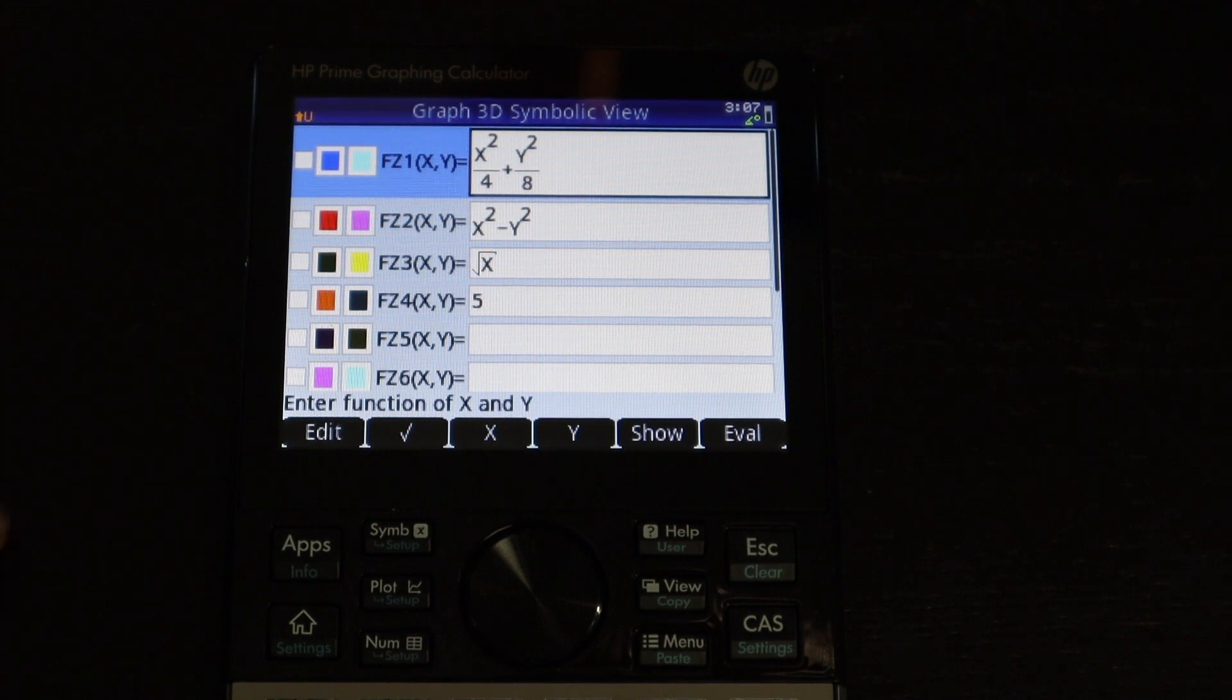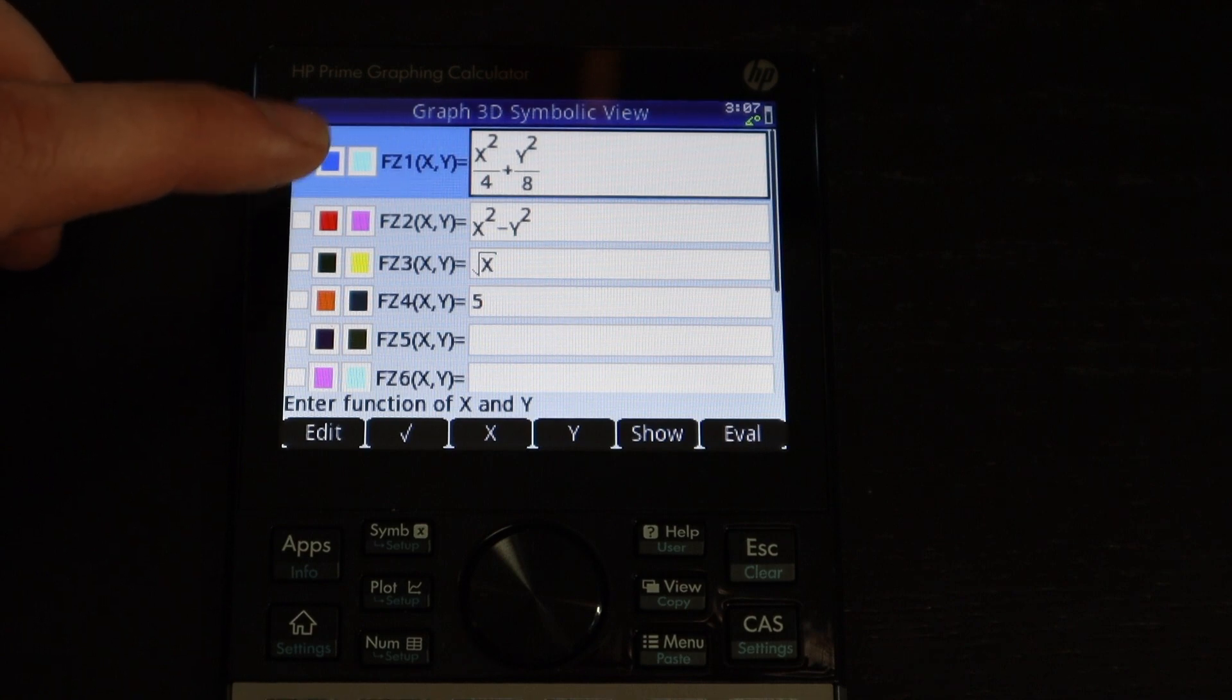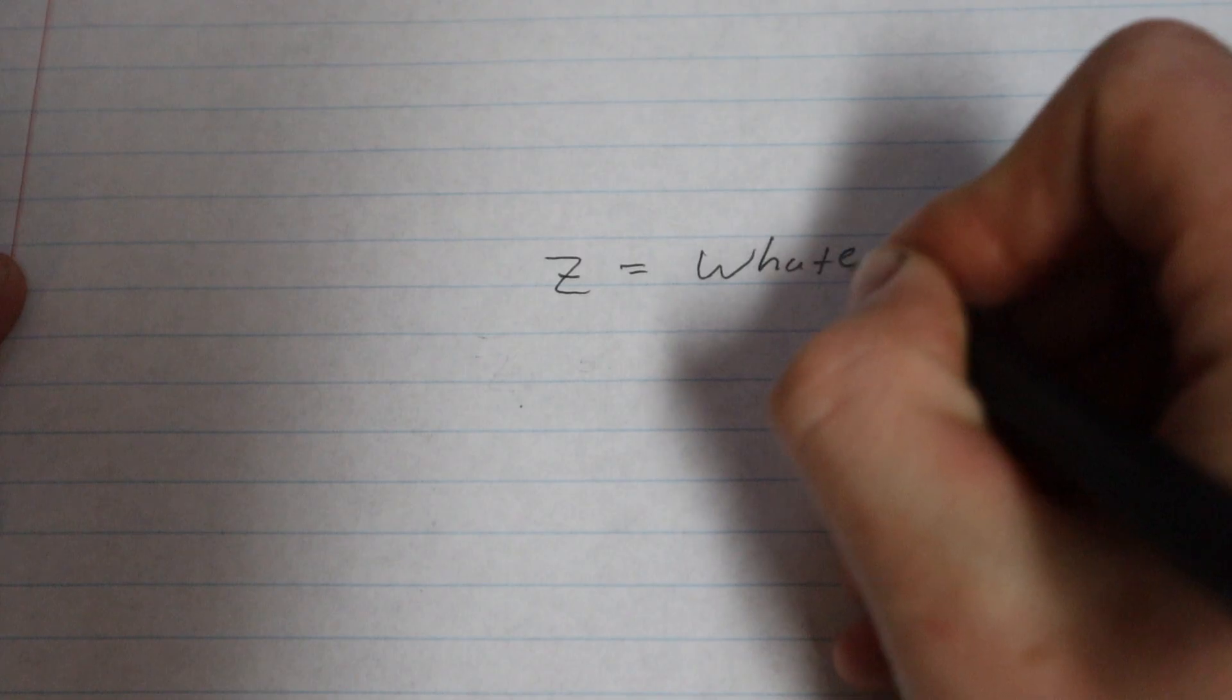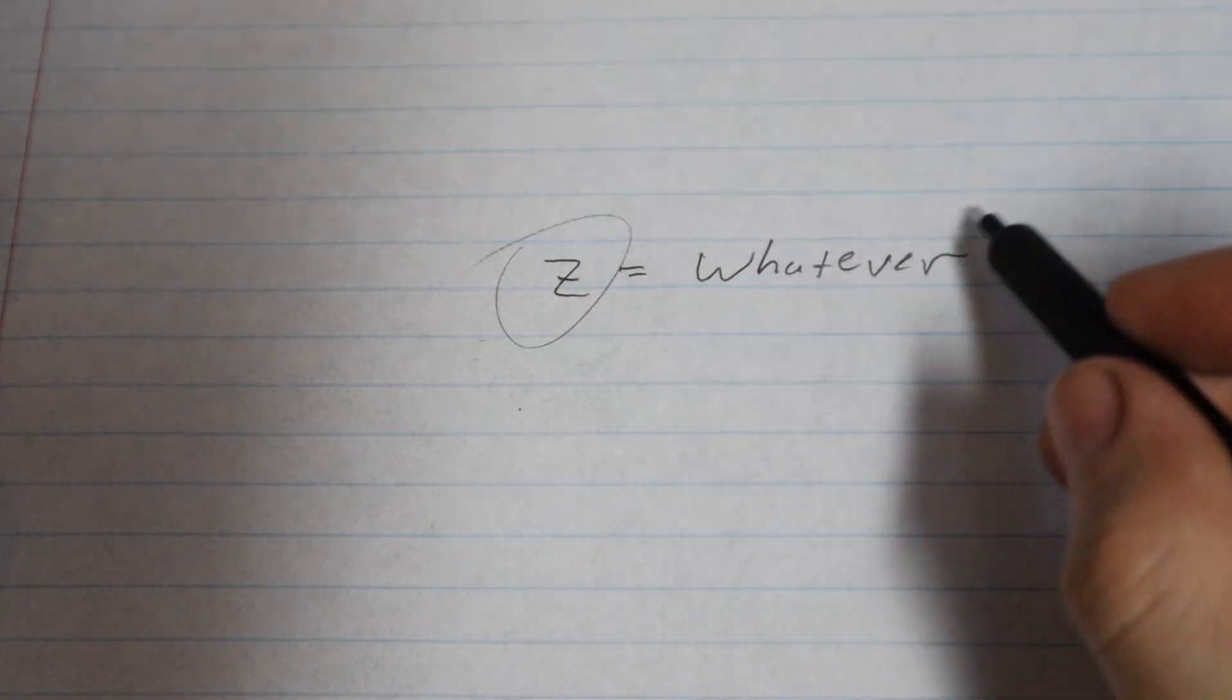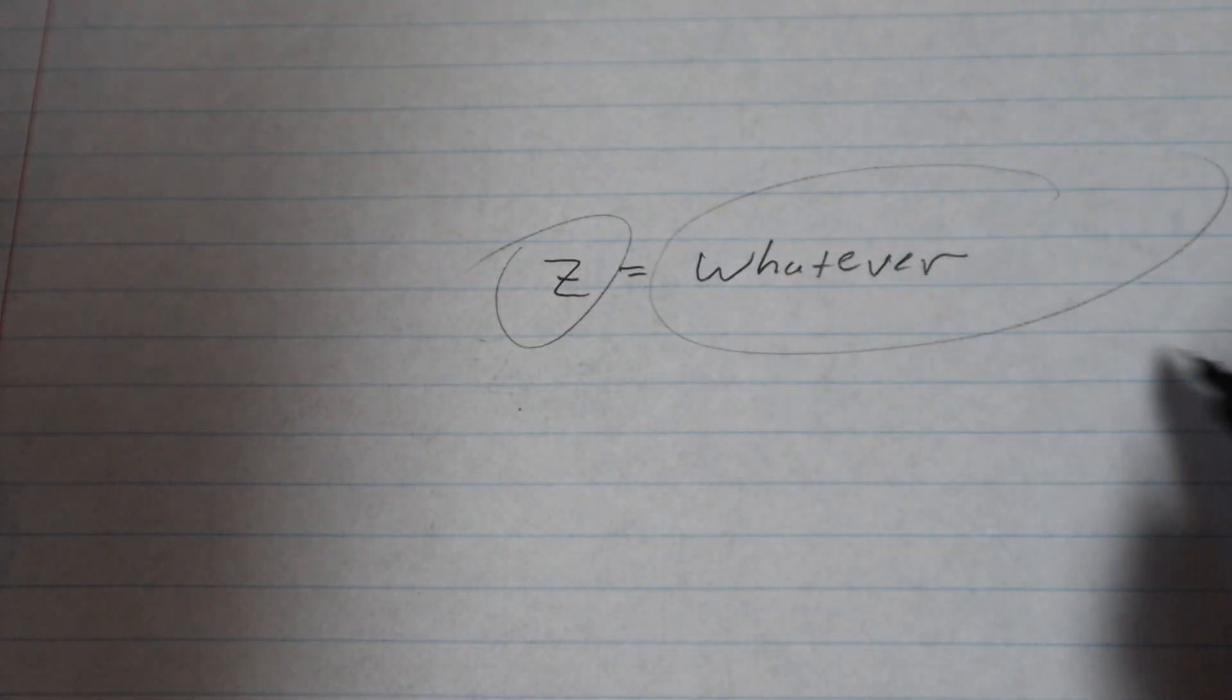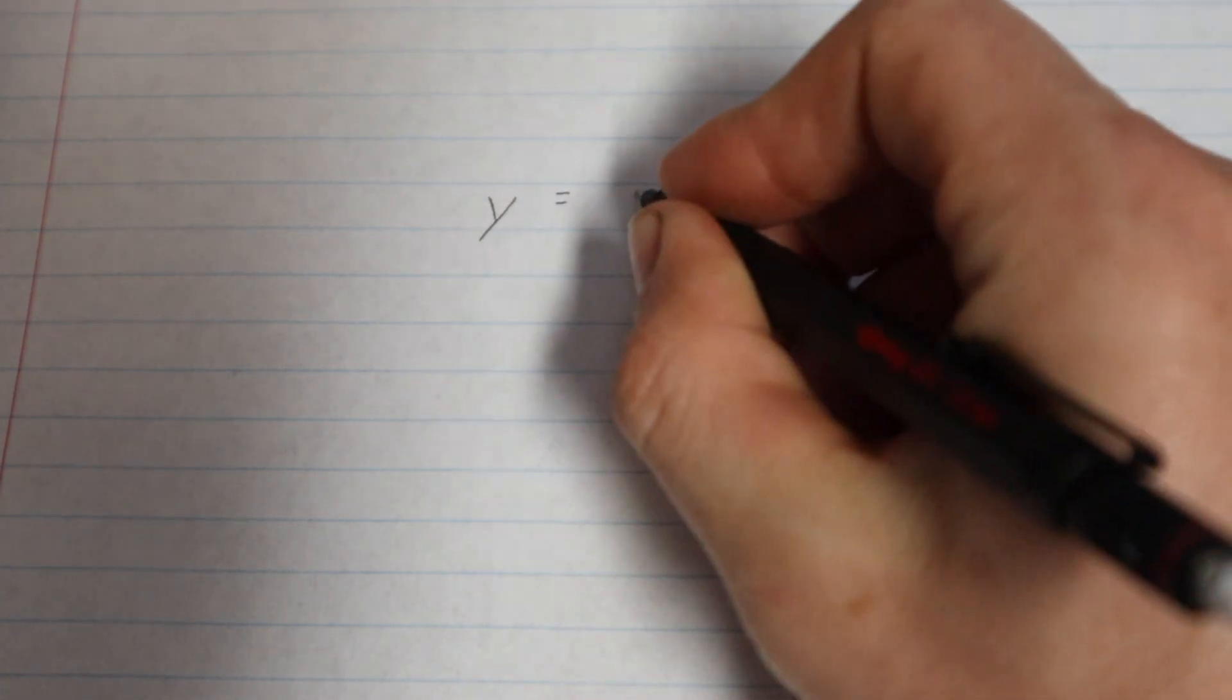So the first ability that this app is sort of missing is the ability to graph any 3D function in any form. So what I mean by that is you have to put the function in the form z equals all on the left side, and then everything else on the right side. So you couldn't just plug in, for example, y equals z plus x.